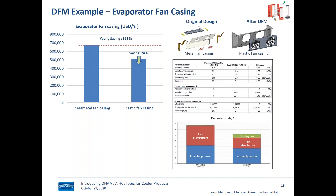Why was this part being made out of sheet metal in the first place? We have CNC punching equipment and bending machines in the plant but not injection molding. So we designed what we could make internally — and it worked, and the customer liked it. The answer is both design and manufacturing habit, which is precisely what we're targeting to shatter using the DFMA approach.